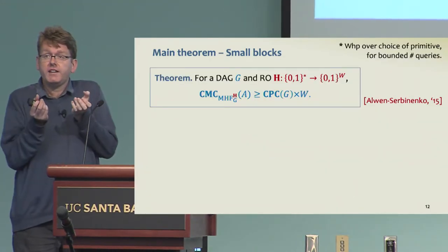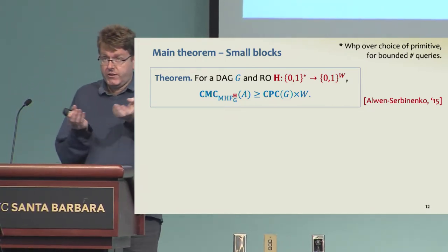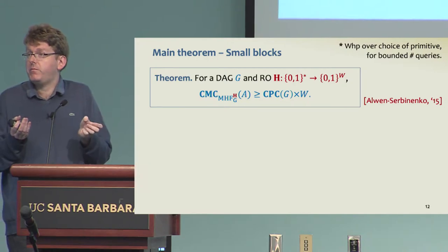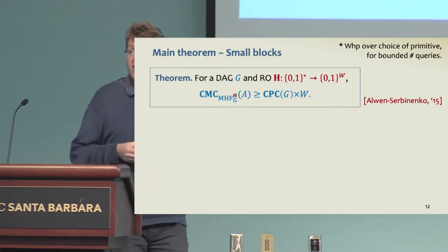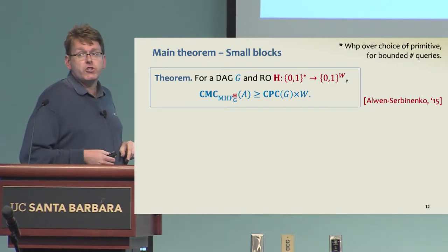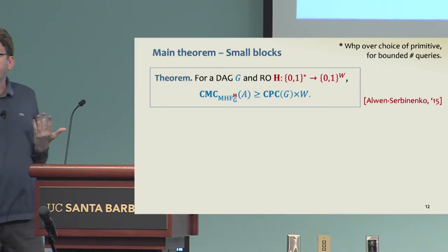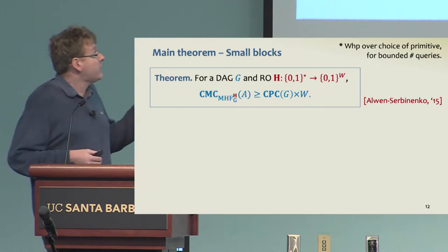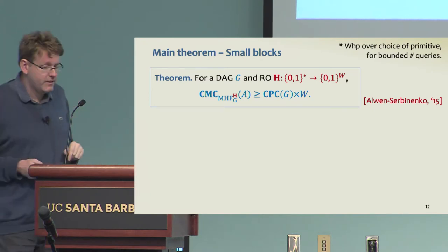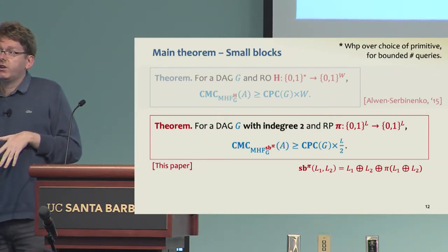Intuitively, if you look at the case where the labeling function is a random oracle, the pebbling complexity is correlated directly with the cumulative memory complexity for those strategies that only store exactly labels in memory. However, a general strategy might try to do something clever and compress information, stores XORs of labels or whatnot. But the result by Alwen and Serbulenko shows that essentially that's the best that can be done. With high probability over the choice of a random oracle, the cumulative memory complexity of an adversary is lower bounded by the pebbling complexity of the graph times the length of the labels.